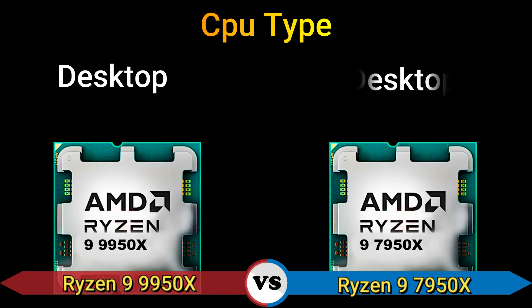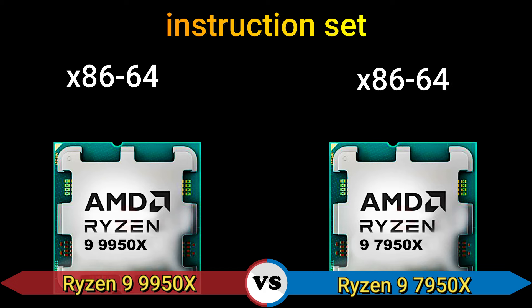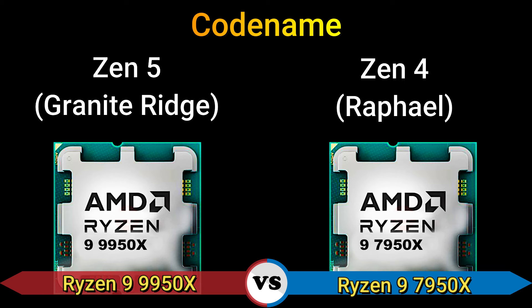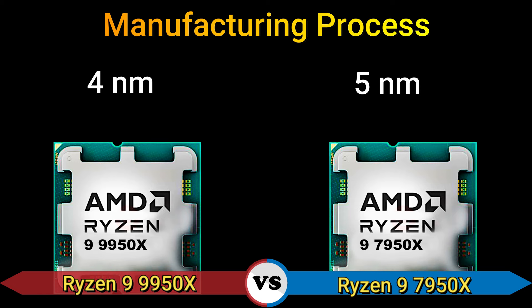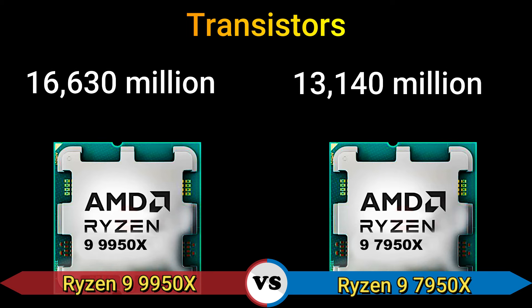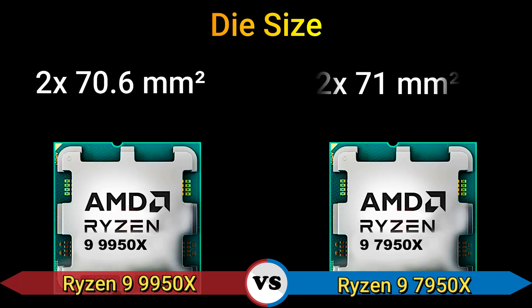CPU type: desktop. Instruction set: x86-64. Code names: Zen 5 Granite Ridge and Zen 4 Raphael. Integrated CPU with random graphics. Manufacturing process: 4 nanometer and 5 nanometer. Transistors: 16,630 million and 13,140 million.